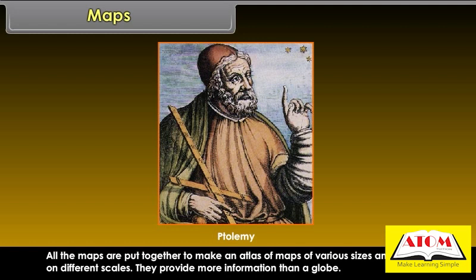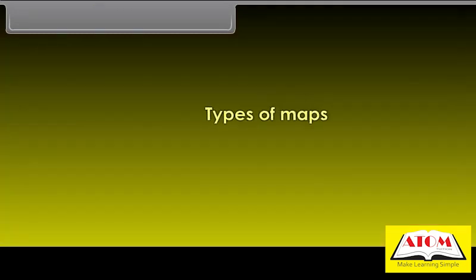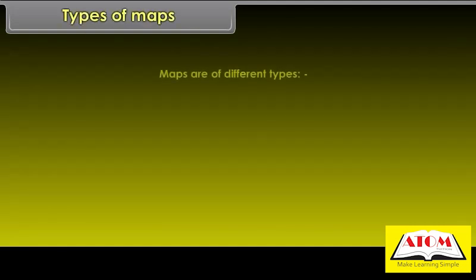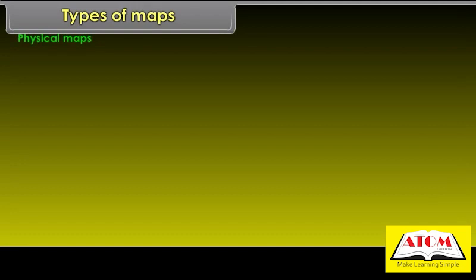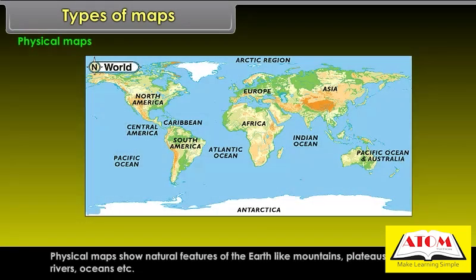Maps provide more information than a globe. Maps are of different types. Physical Maps show natural features of the earth like mountains, plateau, plains, rivers, oceans, etc.